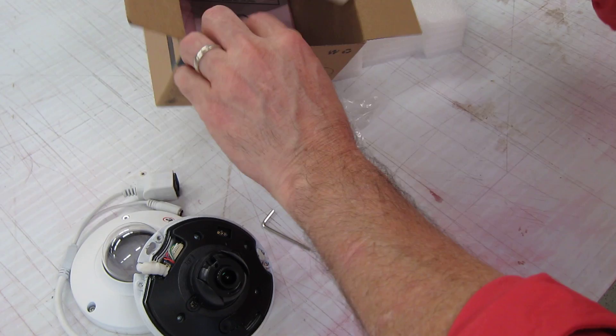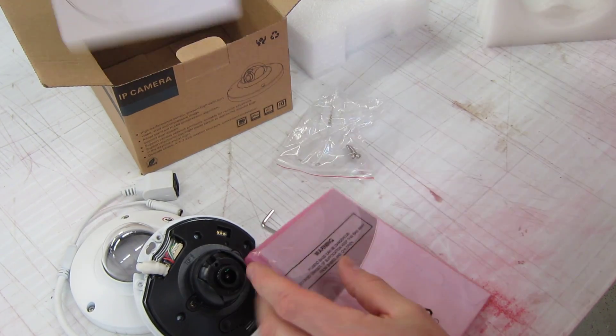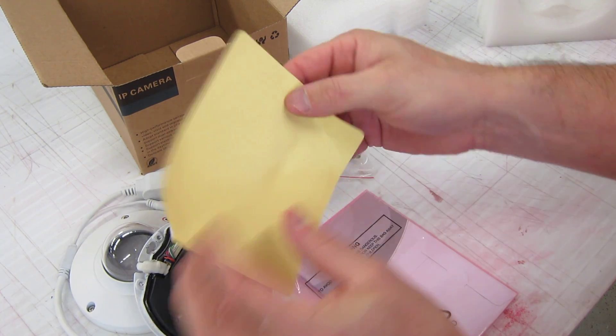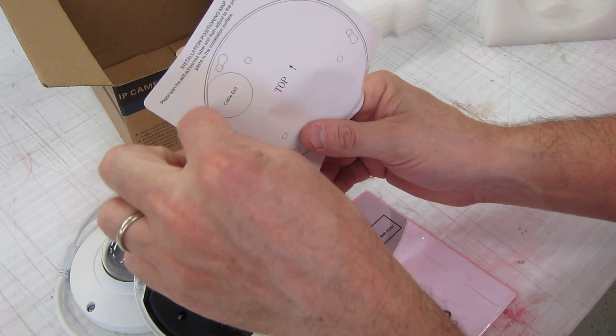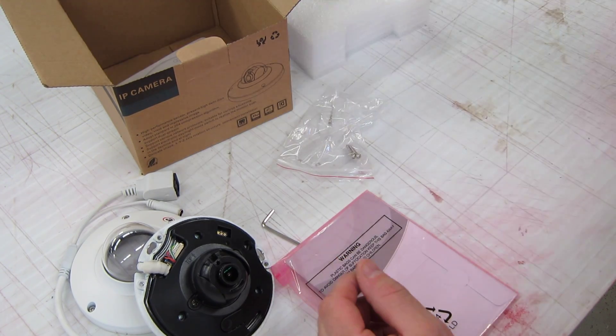What else is in the box? You have a manual and a sticky guide, so you can take this and stick it on the mounting surface. Drill your holes, and it's already marked so you know exactly where to put them.